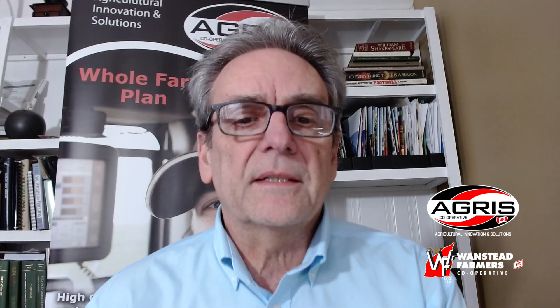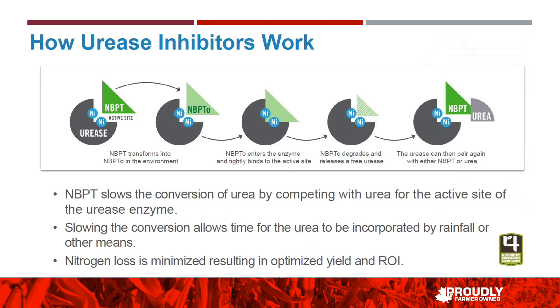How does NBPT work? The urease enzyme is expecting to bind with urea at the nickel binding sites in the enzyme. NBPT fits in there nicely and blocks urea from getting in. Over time — maybe 14 to 20 days — the NBPT will degrade enough that the urease enzyme will begin to find some urea. But hopefully by that time, we've had rainfall or the urea has been incorporated, and losses will cease or become much lower.